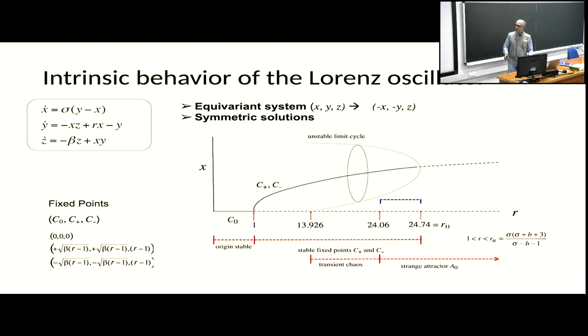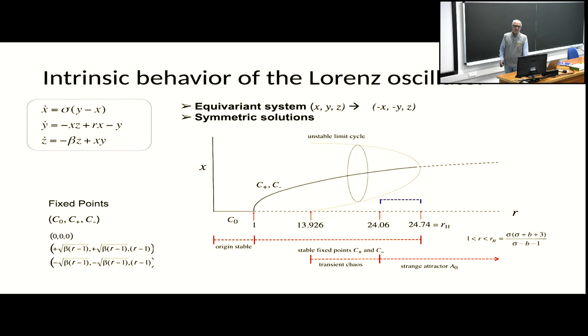Between zero and 13.926 — which is a precisely calculable number — there are only fixed points in this system: one unstable fixed point and two stable fixed points. The two stable fixed points have different basins of attraction. No matter where you start, you go to one of those two fixed points.